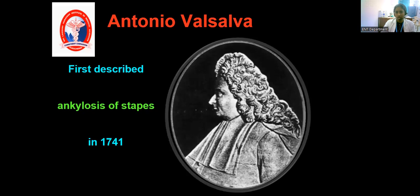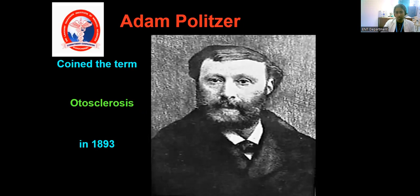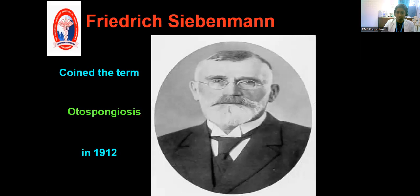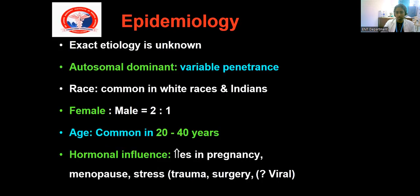Regarding the history, Antonio Valsalva first described the ankylosis of stapes in 1741, and Adam Pollitzer coined the term otosclerosis in 1893. Frederick Siebenbauer coined the term otospongiosis in 1912. The exact etiology of the disease is not known. It is usually an autosomal dominant disease which runs in family history. Any patient with otosclerosis might have a family history of conductive hearing loss. Sporadic incidence is also reported.